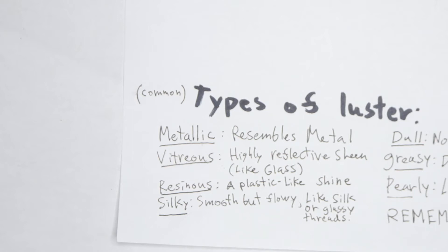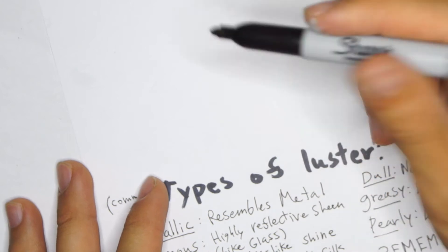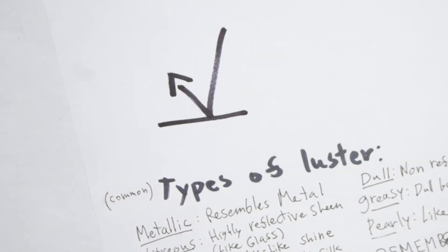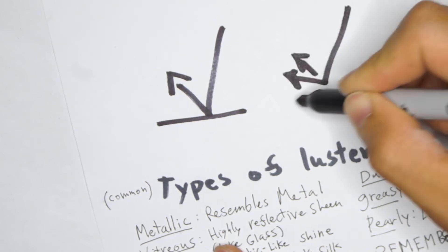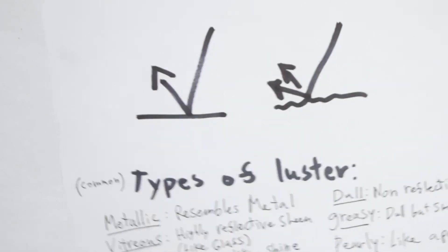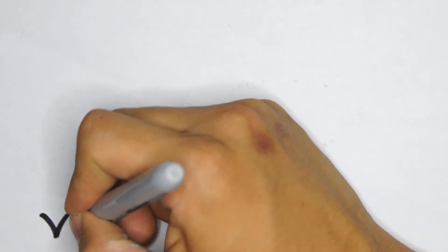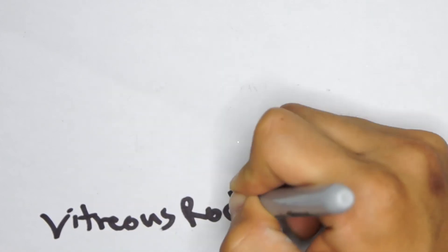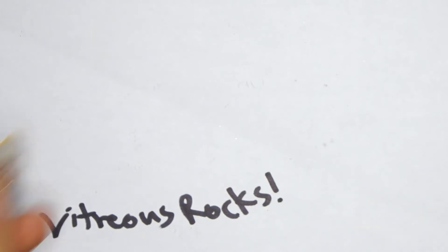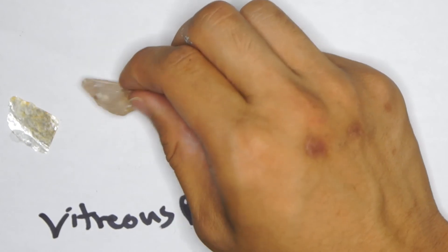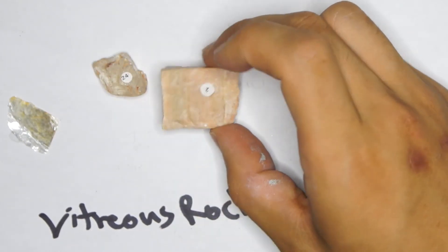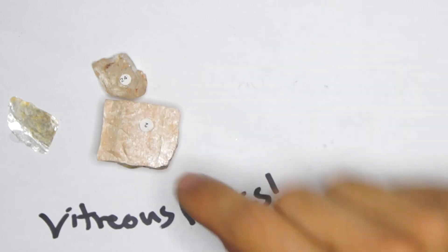It's almost always vitreous. Vitreous means highly reflective sheen like glass. The main thing to remember with luster is it's the reflection, how well it reflects off of a surface. If it's more reflective, it has a higher luster. Usually it's vitreous or sometimes it's metallic. Here are vitreous rocks. You might be tempted to say that this is metallic, but actually it's vitreous. It looks like glass. Just remember if it's metallic, it's going to actually look just like metal.